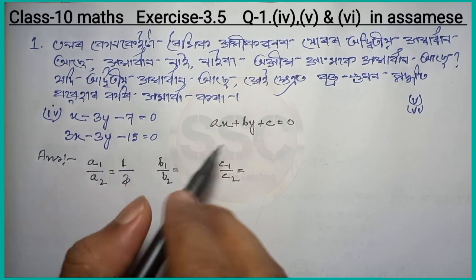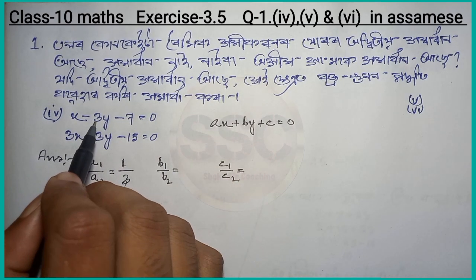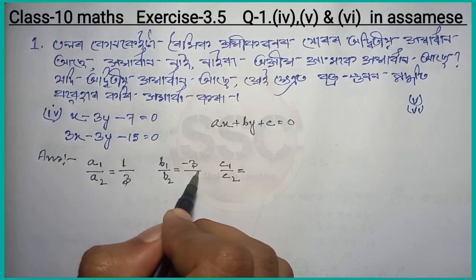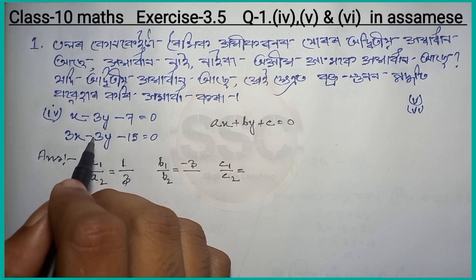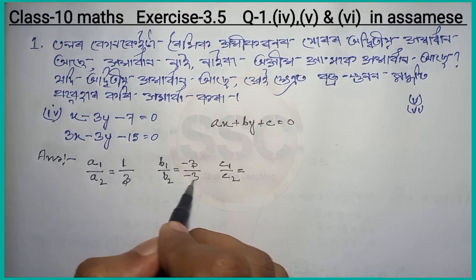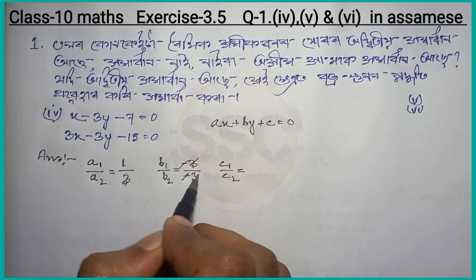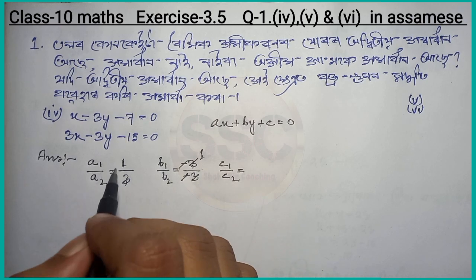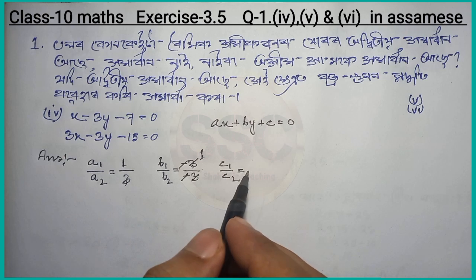So we have B1 by B2. We have minus 3 divided by B2. We have minus 3, so minus 3 minus 1, then B1 by B2 is 1. So A1 by A2 is 1 by 3, B1 by B2 is 1. Then A1 by A2 is 1 by 3, B1 by B2 is 1.